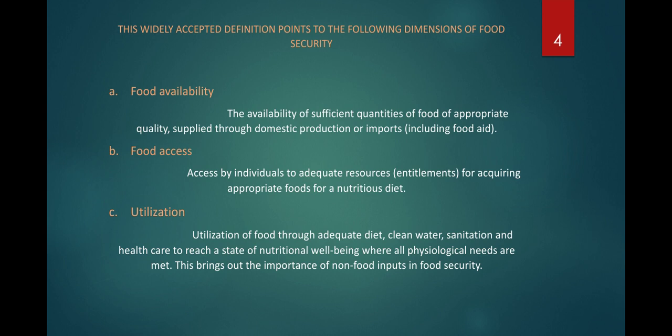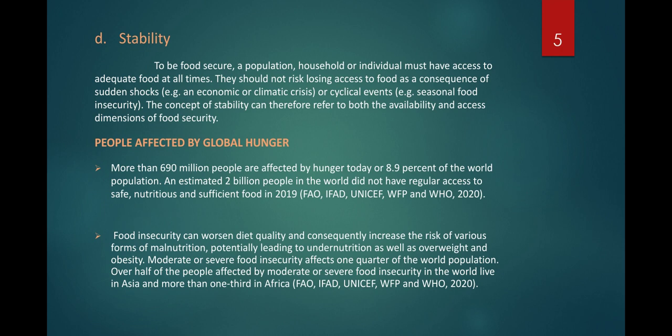Utilization refers to the use of food through adequate diet, clean water, sanitation, and health care to reach a state of nutritional well-being where physiological needs are met. This brings out the importance of non-food inputs in food security. Stability simply means having a stable situation — to be food secure, a population, household, or individual must have access to adequate food at all times and should not risk losing access due to sudden shocks such as economic or climatic crises like floods and droughts.